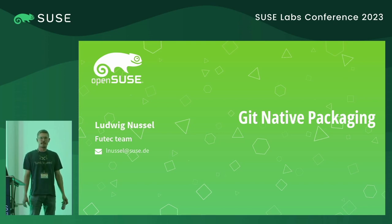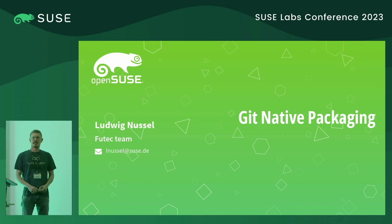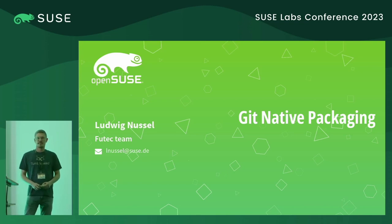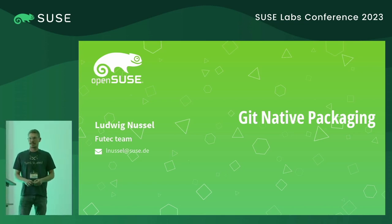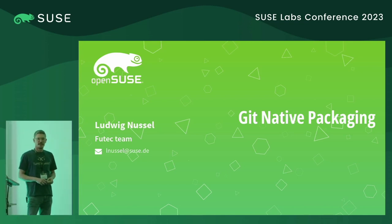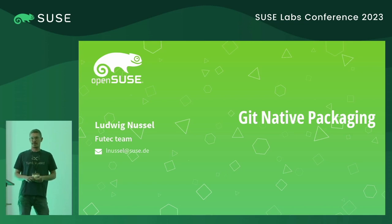Hi everyone, welcome to my talk. I'm Ludwig and today our topic is Git-native packaging. Two hours ago we had a talk about the practical aspects of packaging with Git today, and what I present here is basically ideas about how we could do it in the future. There's no actual implementation of that, so if you expect that, sorry to disappoint you. This is just theories, but I would really like to hear your feedback, especially if you are a packager or working on the distribution.